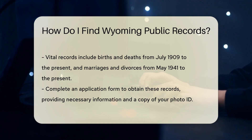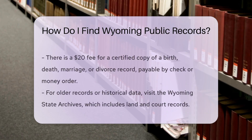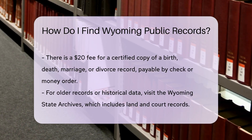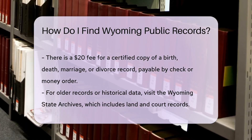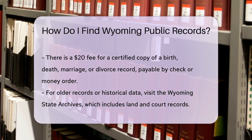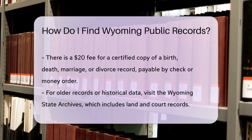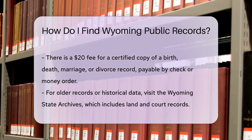Payments can be made by check or money order payable to the Wyoming Department of Health. For older records or additional historical data, you can visit the Wyoming State Archives. They house a wide range of public records, including land records, court records, and more. The state archives can be accessed online or in person.